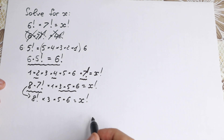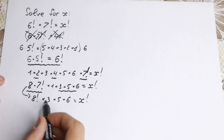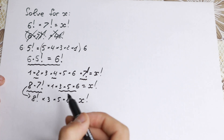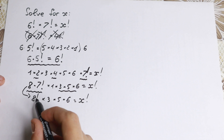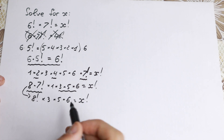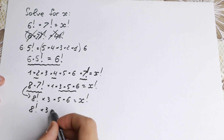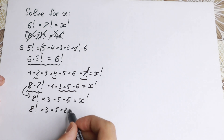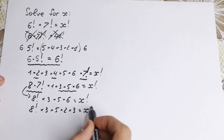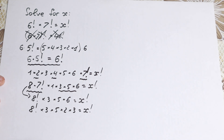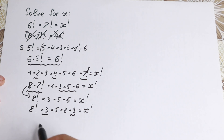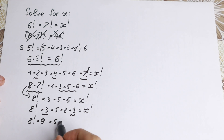Let's continue the same process. We have 8 factorial, and if we can find 9 in the remaining product, we get 9 factorial. I'll write 6 as 2 times 3, so the remaining factors are 3 times 5 times 2 times 3. Grouping the two 3s with the existing 3: 3 times 3 equals 9. So we now have 8 factorial times 9 times 5 times 2 equals x factorial.